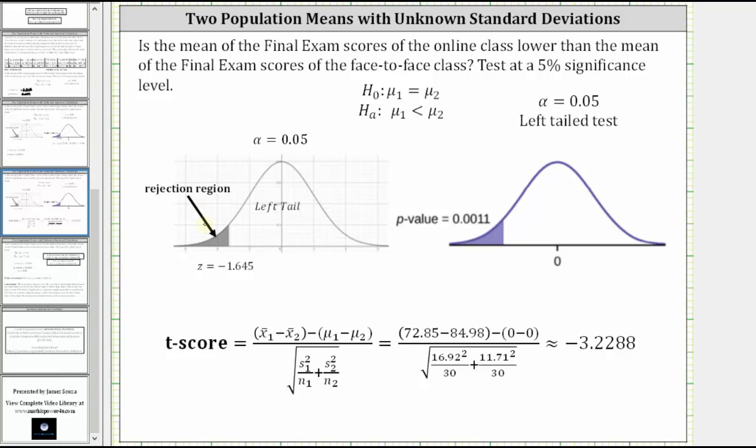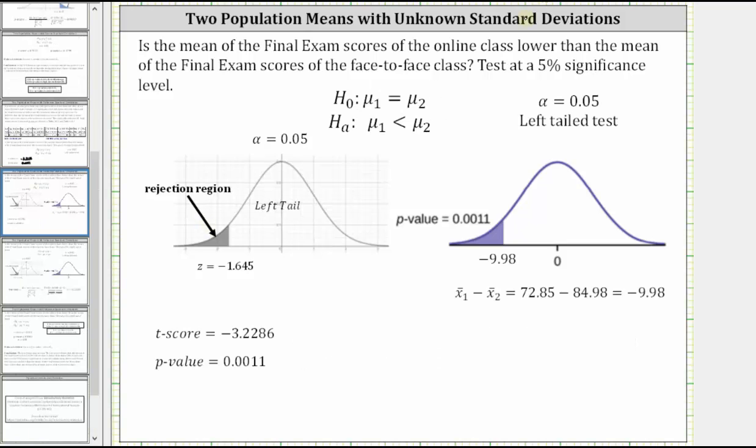Let's also draw the same conclusion by comparing the p-value and alpha. Before we compare the p-value and alpha, let's take a look at this graph here showing the p-value of 0.0011. If the sample means are equal, then the difference is zero, which is why we have zero at the center of this distribution.